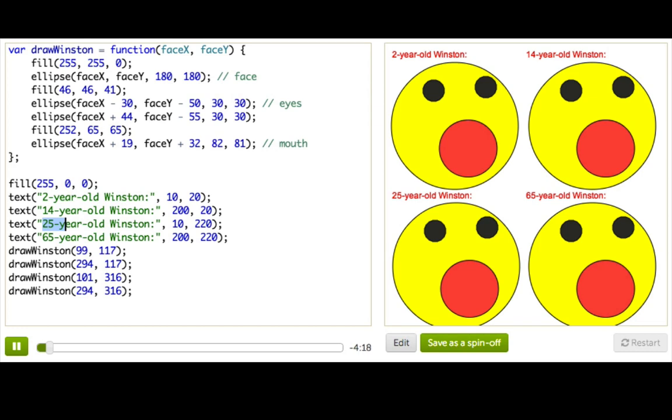But first I need to tell you something about Winston. Winston has an addiction to donuts. He eats three of them a day. It's probably why his face is so big and yellow.